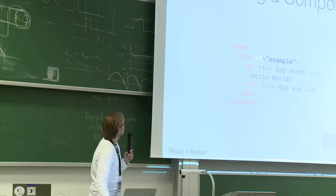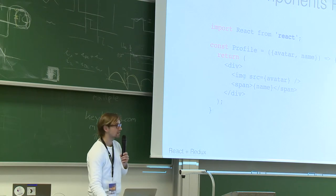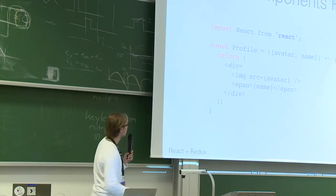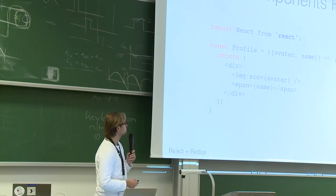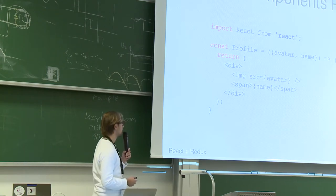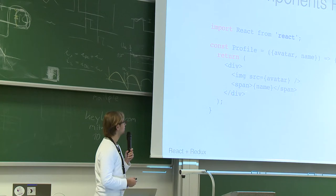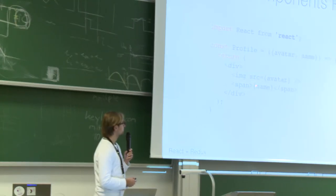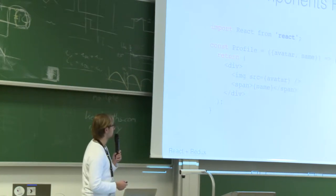So we built our first component — our app component. What you can also do is create nested components and render dynamic content. Here we create our profile component and take parameters — the first argument of a React component is always the props. In this case we destructure them right away, expecting an avatar and a name. The avatar is used as the source URI for the image, and the name is rendered directly into a span. Curly braces are used whenever you want to render dynamic content passed in as parameters.